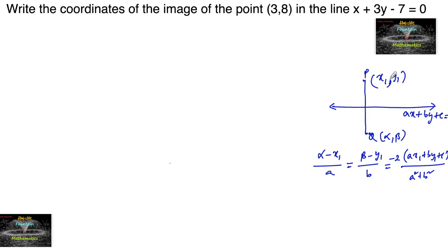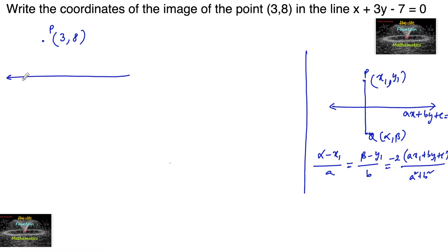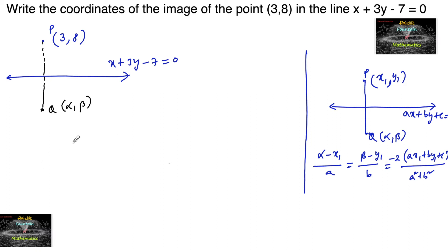Let's use this relation. Here the point given is (3, 8) — call it point P — and we need the image coordinates under the line. The line equation is x plus 3y minus 7 equals to 0. Let us consider the image of point P as Q(alpha, beta). By the relation we have: alpha minus 3 upon a...